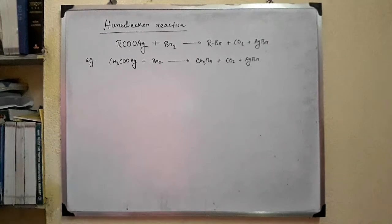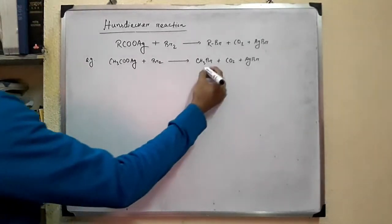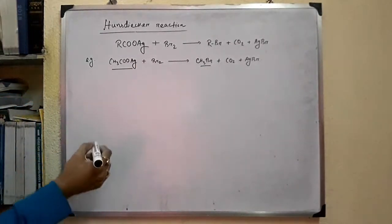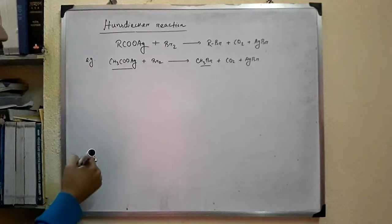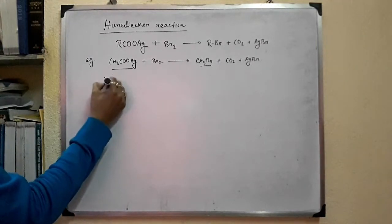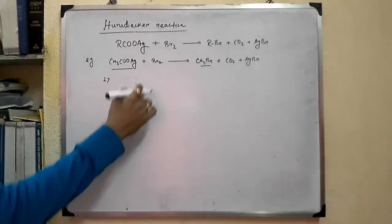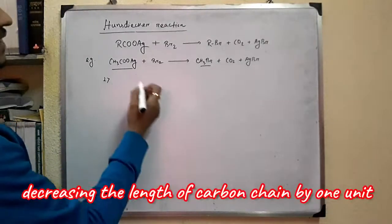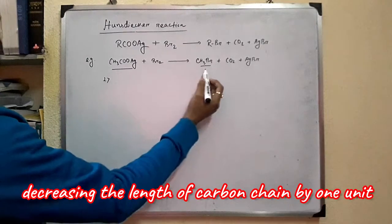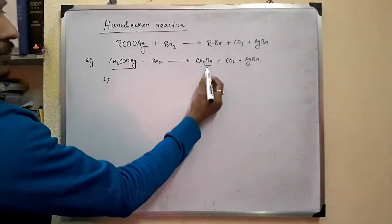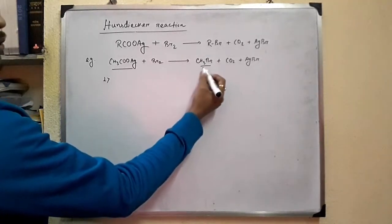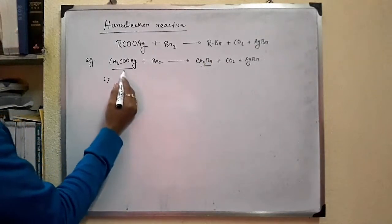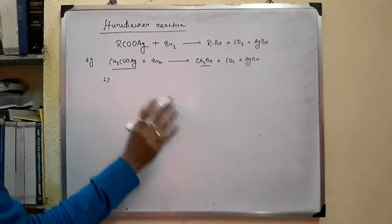This reaction is a method for preparing haloalkanes from the silver salt of acid. Now, few points to note. Point number 1: This reaction is a way of decreasing the length of the carbon chain by one unit. If you see the product, this methyl bromide has one carbon less than the parent silver salt of the acid.